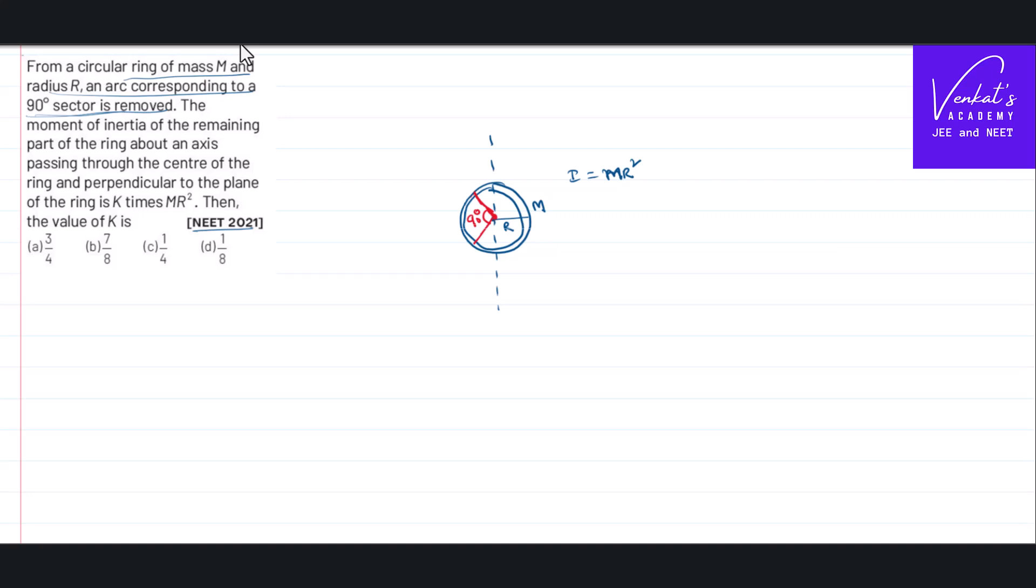If you see, around the circle there will be 360 degree angle, right? Out of 360 degree angle, 90 degrees, 90 degree is removed.